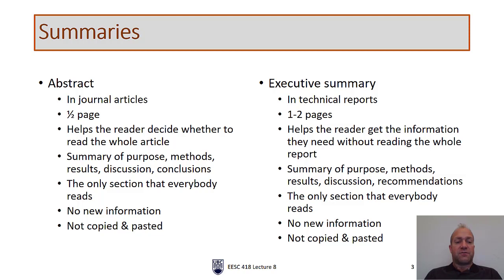An abstract is found in journal articles and is approximately half a page in length, whereas an executive summary is found in a technical report and is usually about two pages. The purpose of an abstract is really to help the reader decide whether or not to read the whole article. However, with an executive summary, often the reader has no intention of reading the whole article — they just want to get the key information they need from the executive summary.